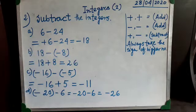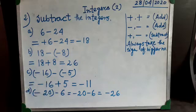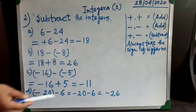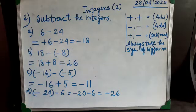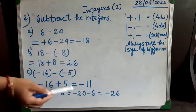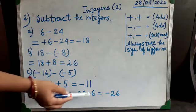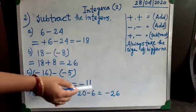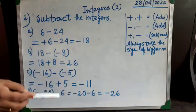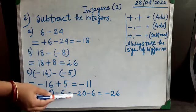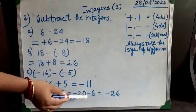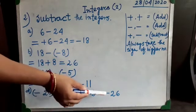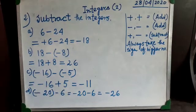Another example: minus 20 minus (minus 6). First, take the number out of the bracket: minus 20 and minus 6. Both numbers have the same sign — both negative — so we add them. The answer is minus 26.